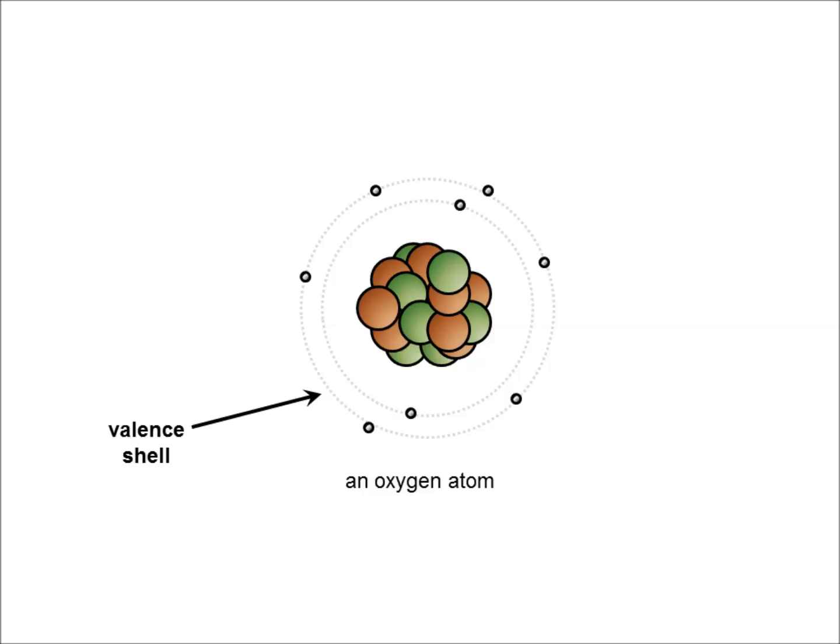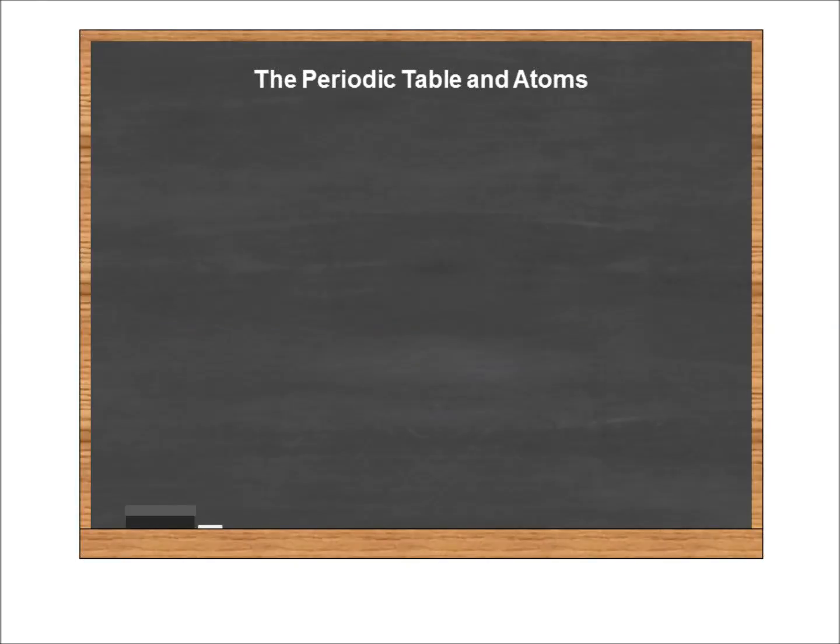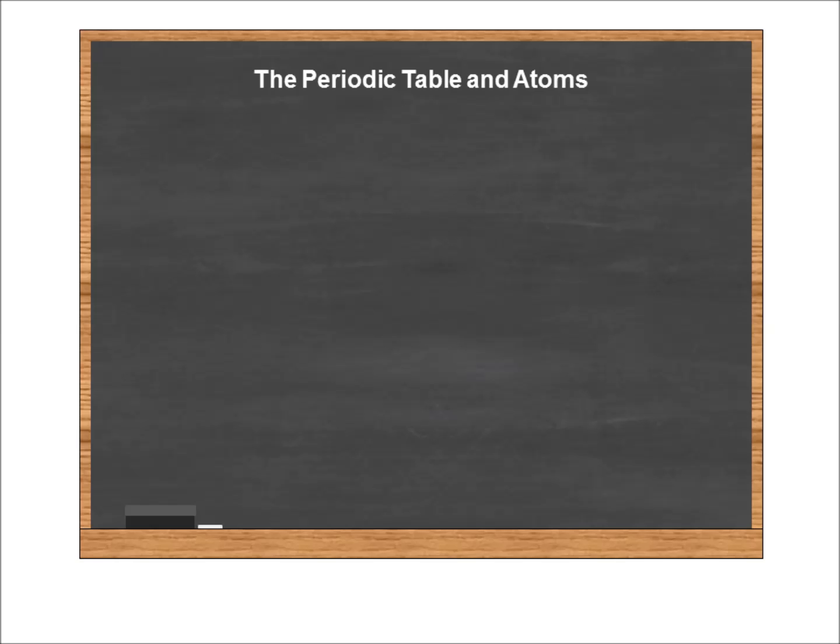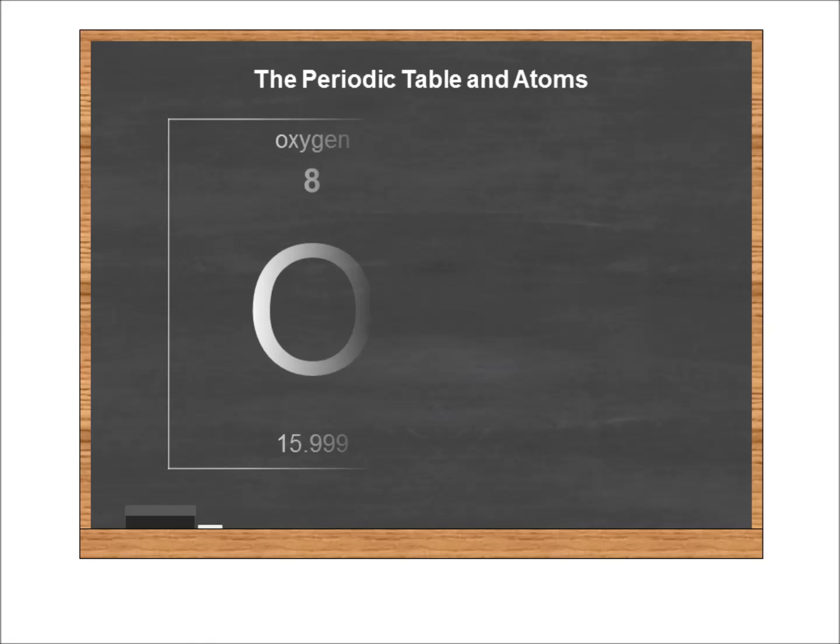Having run briefly through the structure of an atom, let's take a look at how the periodic table relates to atomic structure. So since we've been running with oxygen, let's keep up that. Here is a typical periodic table entry for oxygen, and you see several things in this entry. In the center, we have the chemical or atomic symbol, O.